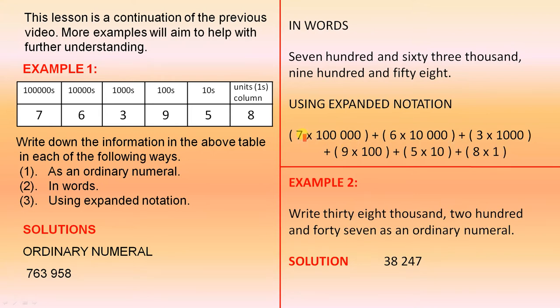So they're the six digits. We'll just check we have them in the correct order: 763958. Always double check, and that is correct.